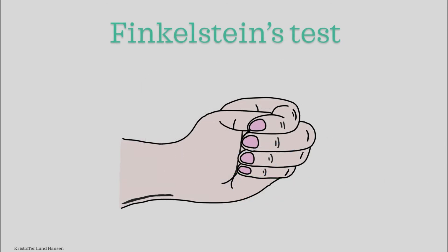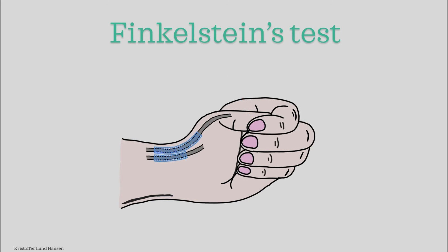And now to the Finkelstein's test. This is a specific test used to diagnose De Quervain's tenosynovitis. The first thing to do is to have the patient make a fist. While making the fist, the thumb should be held inside the fist, as indicated here. If we then look at the important structures inside the hand, the tendons will lie in a position like shown here.